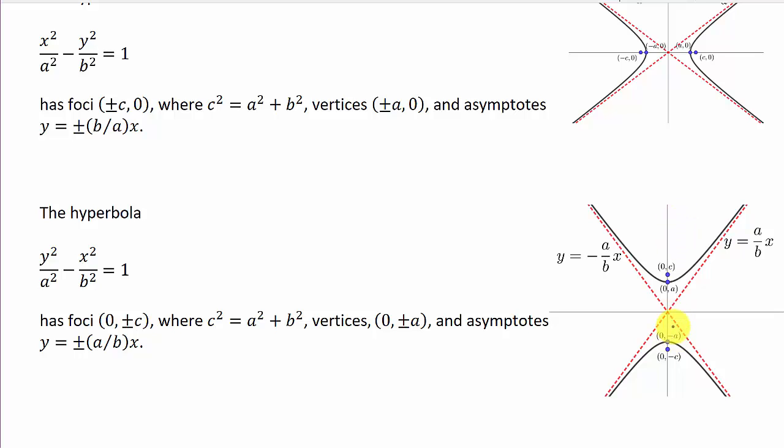And the foci is 0 plus or minus C, which are these points here and here. And then we have vertices at 0 plus or minus A, which is the point here and the point here. And the asymptotes, Y equals plus or minus A over B times X.